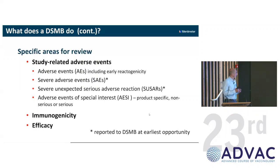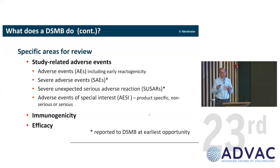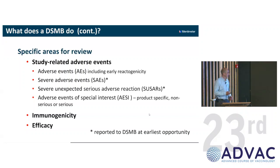The DSMB's big focus is looking at adverse events. At each DSMB meeting you're presented with a summary and line listings for all adverse events. Severe adverse events, severe unexpected serious adverse events, and where appropriate adverse events of special interest are reported to the DSMB at the earliest opportunity, and a decision is made as to whether there is a requirement for an ad hoc meeting. The DSMB also needs to understand the impact of the vaccine — is it immunogenic? Is it efficacious? That data needs to be fed to the DSMB as well.